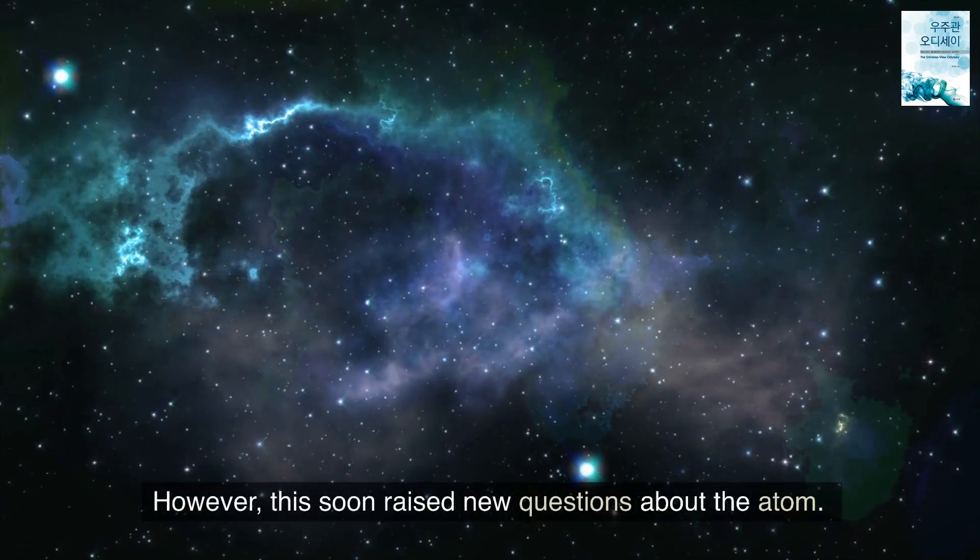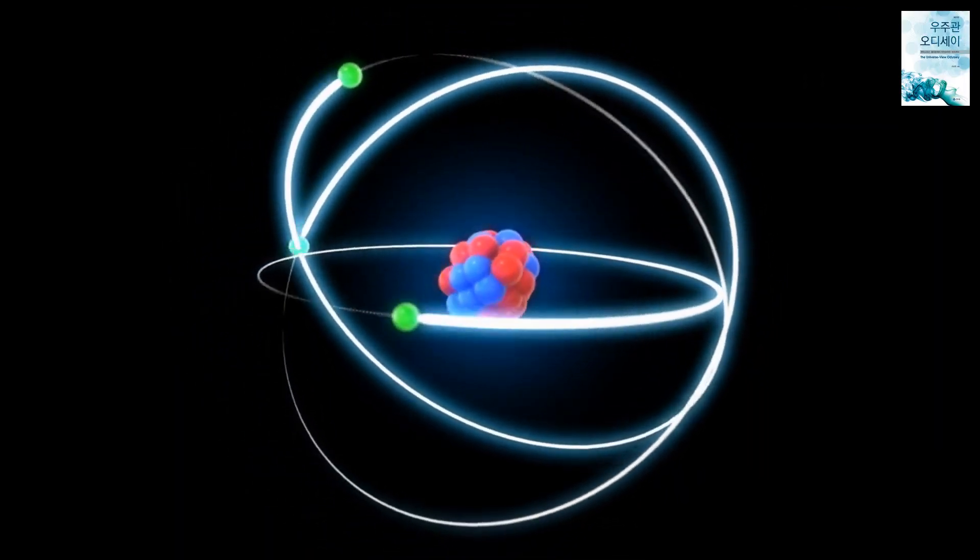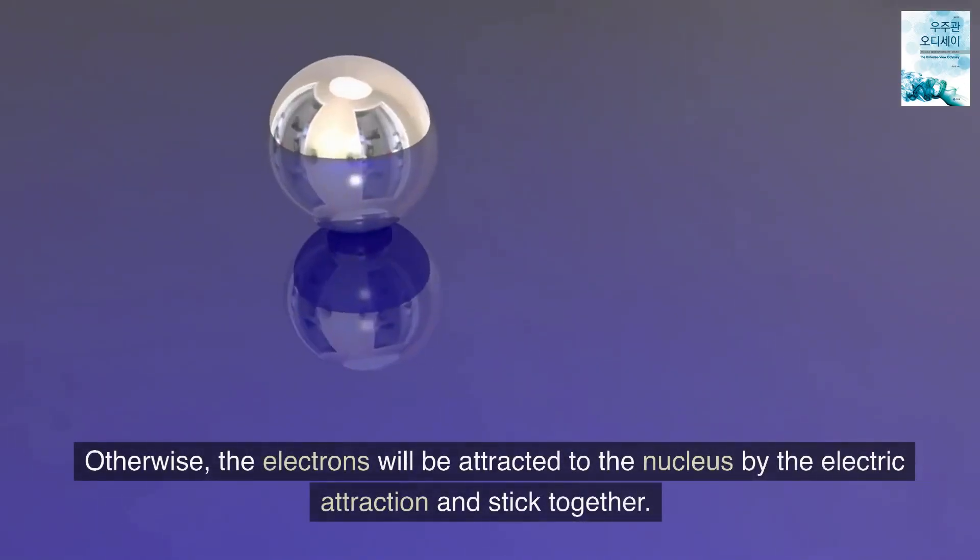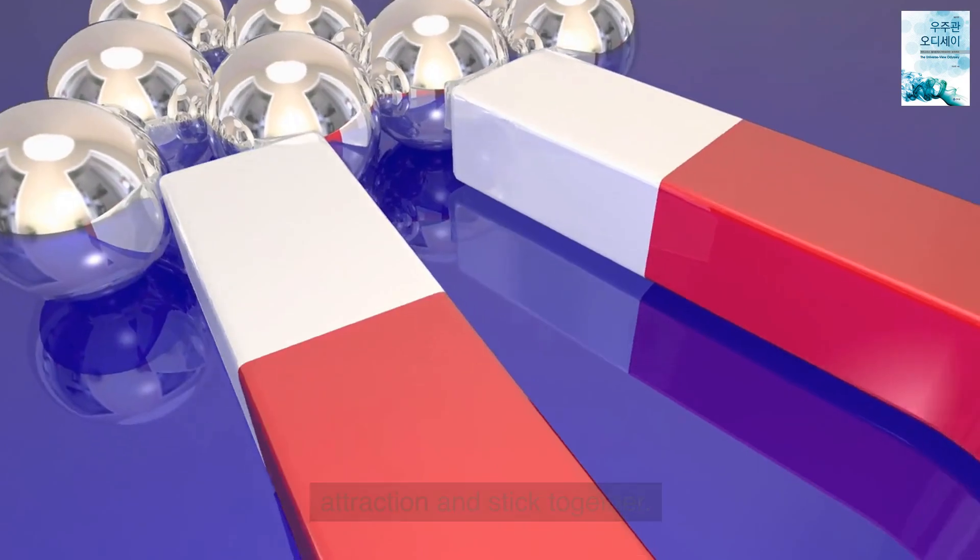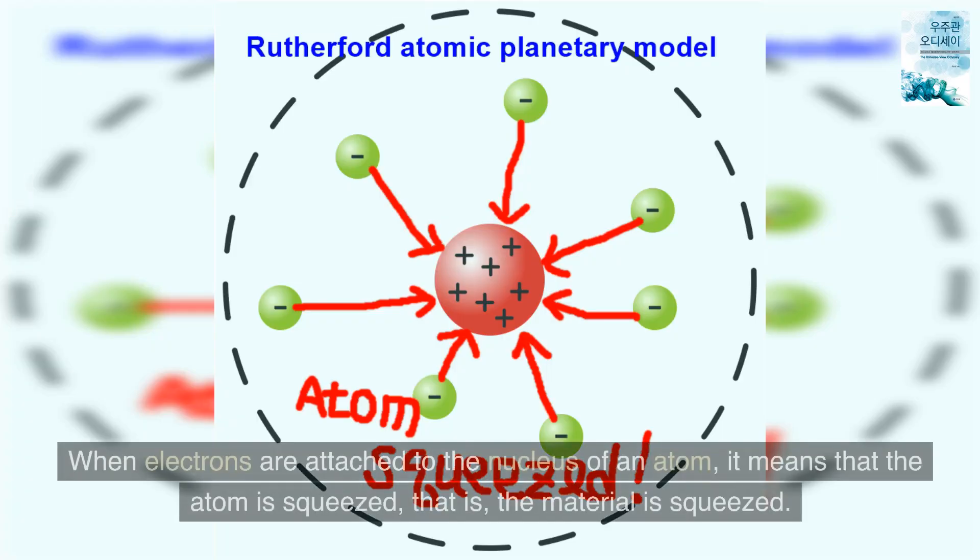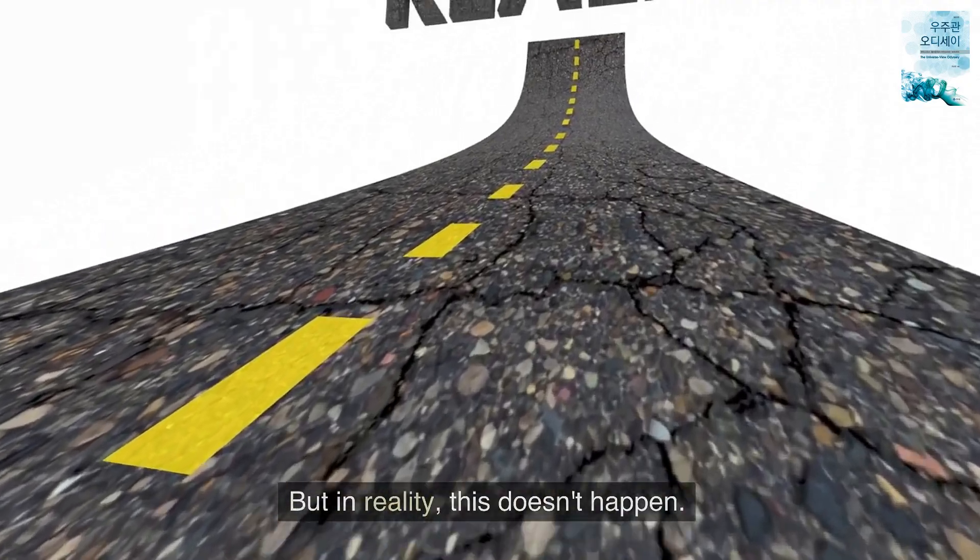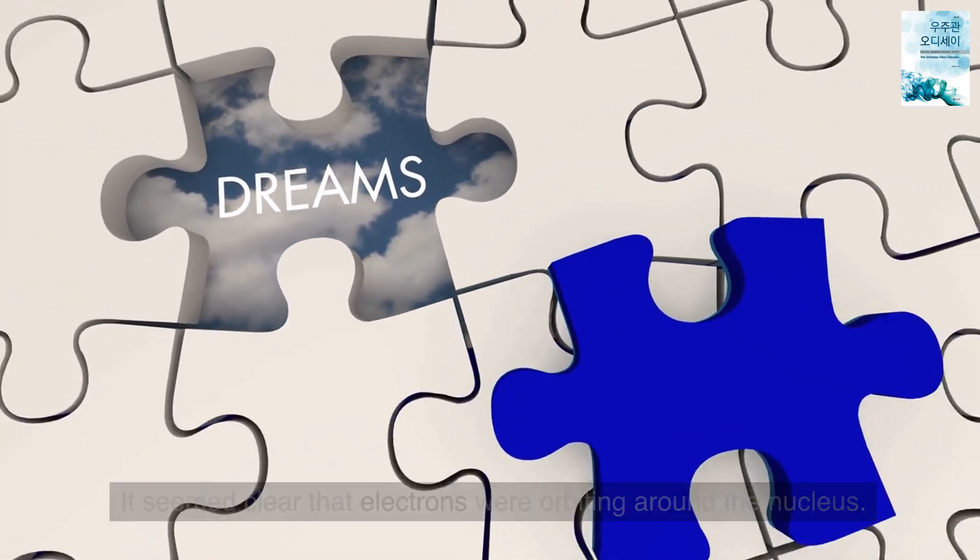However, this soon raised new questions about the atom. Electrons must revolve around the nucleus. Otherwise, the electrons will be attracted to the nucleus by the electric attraction and stick together. When electrons are attached to the nucleus of an atom, it means that the atom is squeezed, that is, the material is squeezed. But in reality, this doesn't happen.